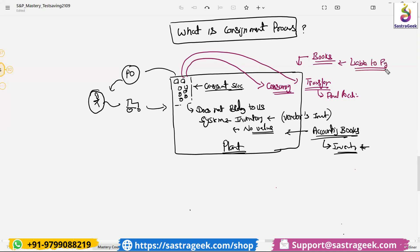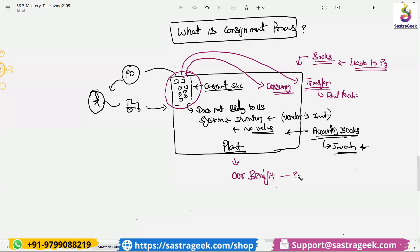Until then, as long as we are not transferring the material from the consignment location to our own location or consuming it, we are not going to pay for this material. So the vendor is keeping this material here and we are consuming it here. What is our benefit — as a plant, as a company — in doing the vendor consignment process?